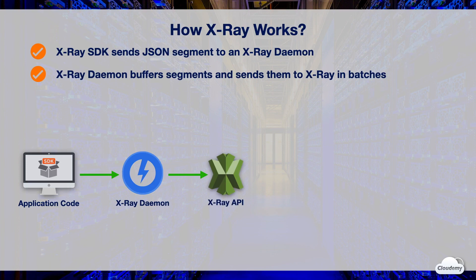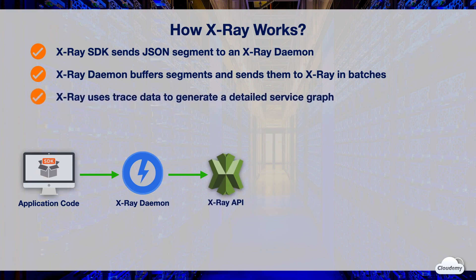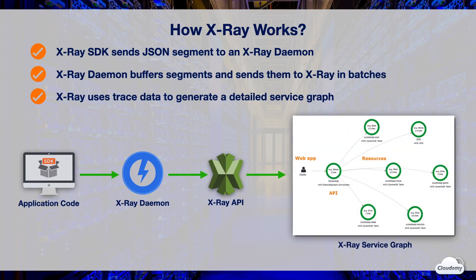Via the X-Ray API, X-Ray uses trace data from the AWS resources that power your cloud applications to generate a detailed service graph.